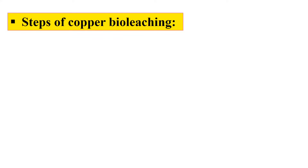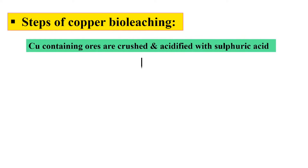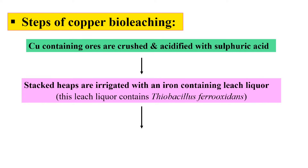What are the steps of copper bio-leaching? First of all, the copper-containing mineral ores are crushed and acidified with sulfuric acid. Then the stacked heaps are irrigated with the iron-containing leach liquor.